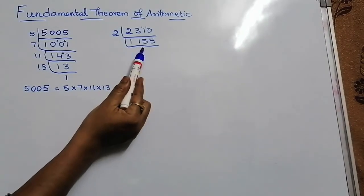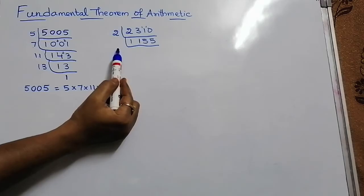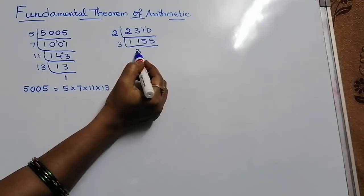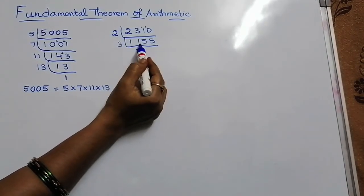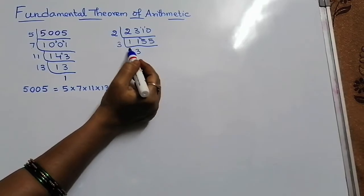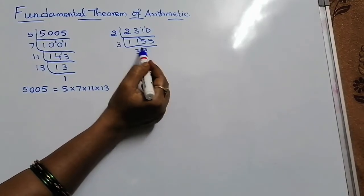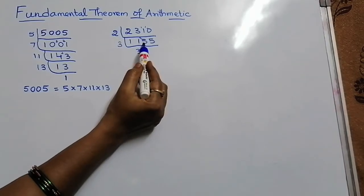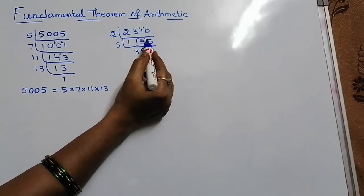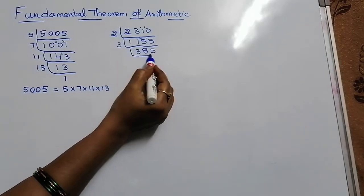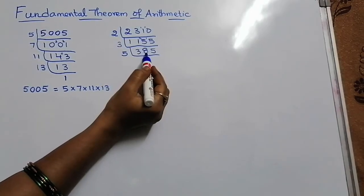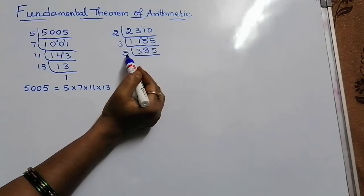Next, check whether 2 is divisible here or not — it is not divisible. Go for the next prime number 3. 3 threes are 9, but 11 is there; difference is 2. 25 — 3 eights are 24, but 25 is there; difference is 1. 15 — 3 fives are 15. Next, it is divisible only by 5; 2 and 3 are not divisible here, so take 5. 5 sevens are 35, but 38 is there; difference is 3. 35 — 5 sevens are 35.